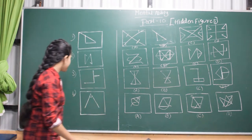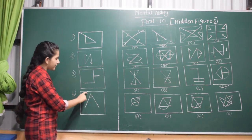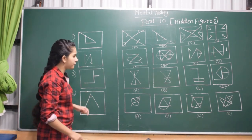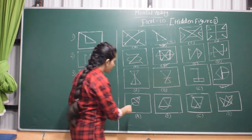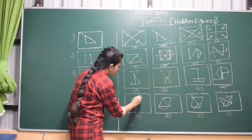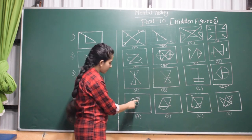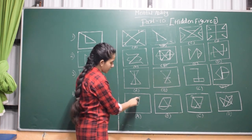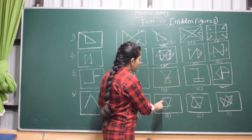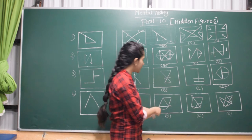Now let's go to the last question. Here there is an A shape and there is an arc. Let's find in which of the answer figures this figure is hidden. In the first option, there is an A shape which is inverted, but it does not have an arc — it has a line with a circle inside, but it is not an arc. So this is not the answer. In option B, there are two triangles but there is no arc, so that is also not the answer.